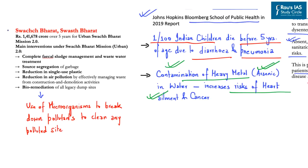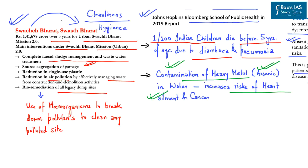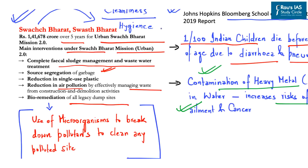An important aspect associated with hygiene is the Swachh Bharat and Swasth Bharat connection — integrating cleanliness with hygiene. The budget of 2021 provides Rs 1,41,678 crores over five years for Urban Swachh Bharat Mission 2. Main interventions include complete fecal sludge management and wastewater treatment, source segregation of garbage, reduction in air pollution by managing construction and demolition waste, and bioremediation of legacy dump sites using microorganisms to break down pollutants.